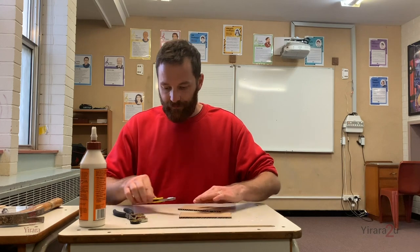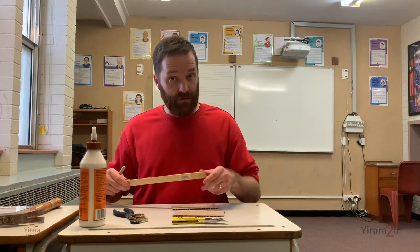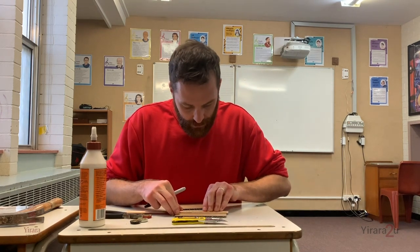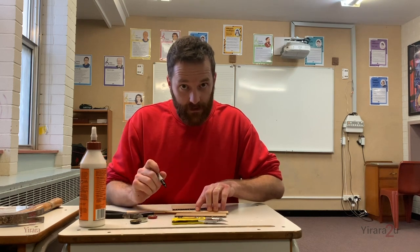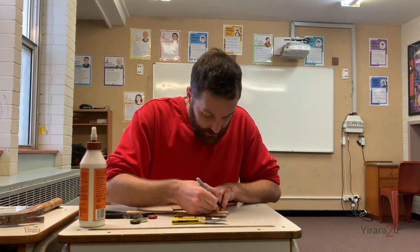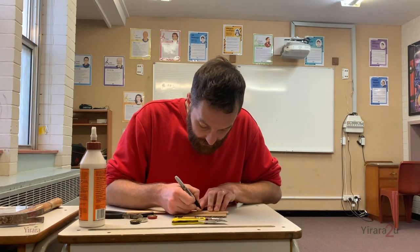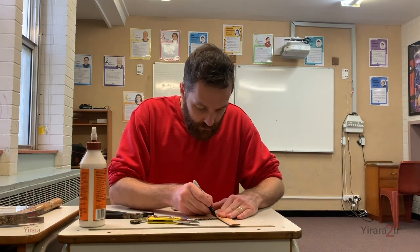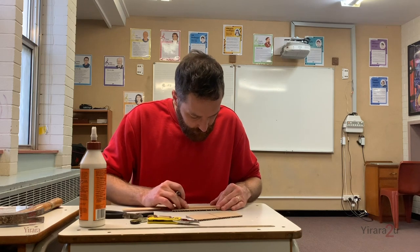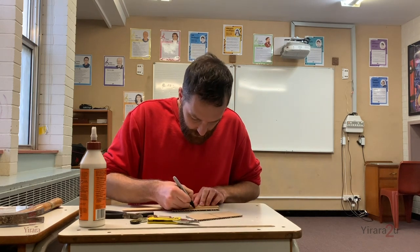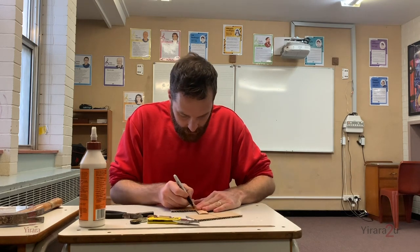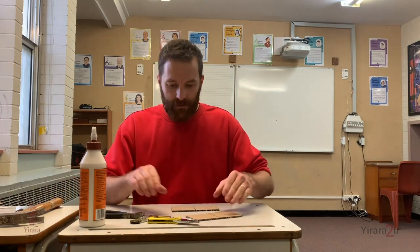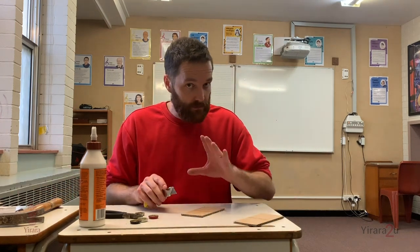Now you should have two identical rectangles. The next thing we need to do is make a line in the middle. Get your ruler and measure all the way across — this one has 15 centimetres. Half of 15 is 7.5, so go along, put a mark there at 7.5, and draw a line. Do this on the other one as well — 7.5 centimetres.